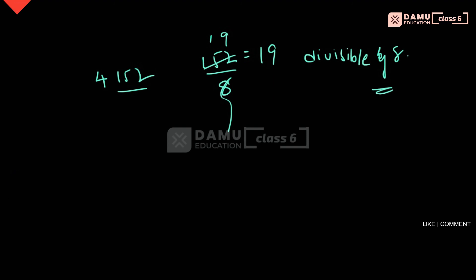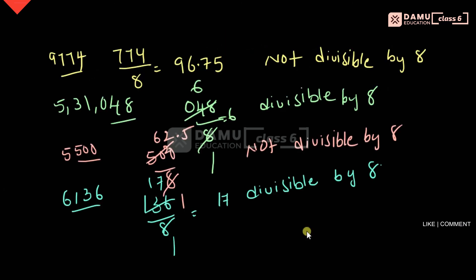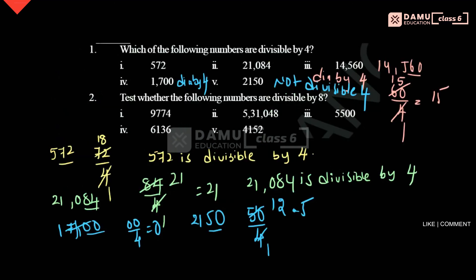So to summarize: the numbers not divisible by 8 were 9774 and 5500. The numbers divisible by 8 are 6136 and 5,310,048. Thanks for watching, please subscribe.